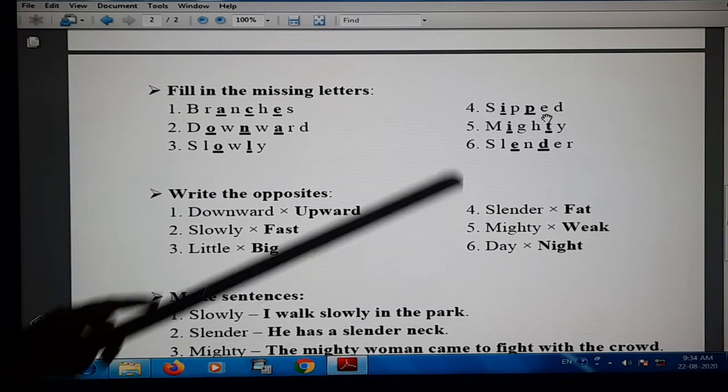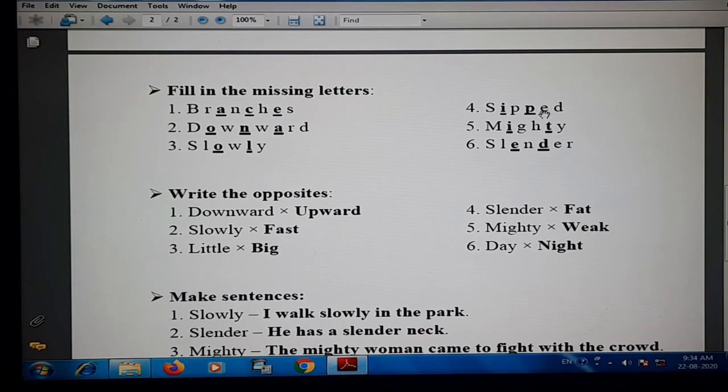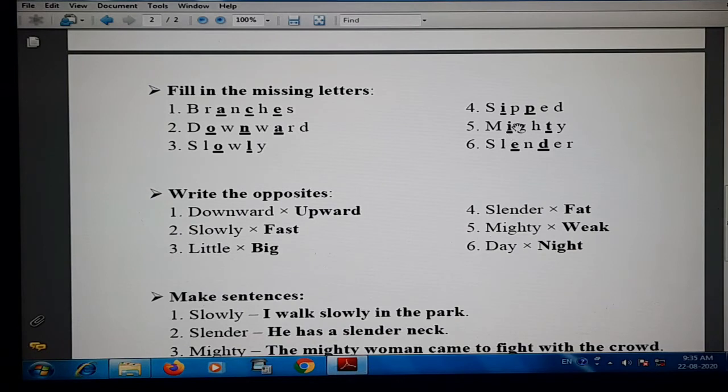Number four, sipped: S, I, double P, E, D. Under I and P are dashes for the missing letters. Number five, mighty: M, I, G, H, T, Y. The missing letters with dashes are on I and T.